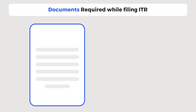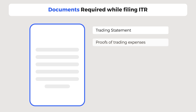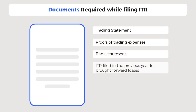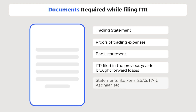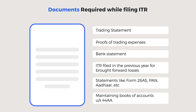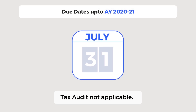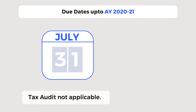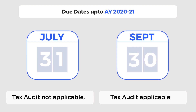When filing an income tax return with business income, you need documents like trading statements, proof of trading expenses, bank statements, ITR filed in previous years for brought-forward losses, along with other statements like Form 26AS, PAN, Aadhaar, etc. A trader should maintain books of accounts under Section 44AA — such as sales, purchase, and expense ledgers — in a manner that the income tax officer can derive the taxable income. Most statements can be downloaded from your broker. The due date to file ITR is 31st July if tax audit is not applicable, and 30th September if tax audit is applicable.